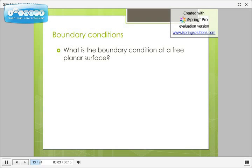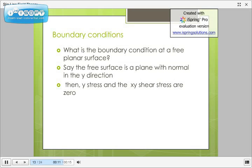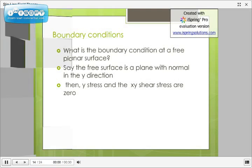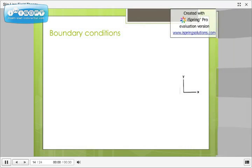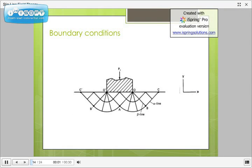Now, let's try to understand the boundary condition at a free planar surface. Let us say the free surface is a plane with normal in the y direction. Then, y stress and the xy shear stress are zero. We can understand it clearly from the following figure. This figure shows plane strain indentation. Here, OC is free surface. Hence, sigma y and tau xy equal zero at this free surface.